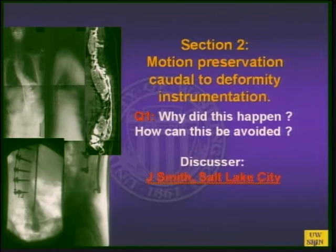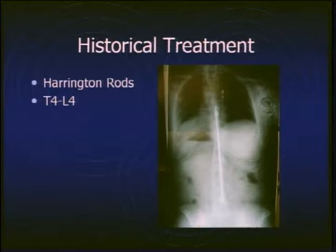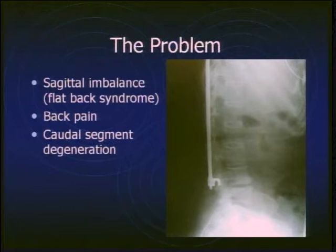The question I'd like to raise is: why did this happen and how can this be avoided? The classic treatment, as we discussed earlier, was T4 to L4 — what Sherm Coleman taught me. The problem seen in long-term Harrington rod patients is really the issue of flat back syndrome and true sagittal imbalance. These patients are certainly prone to back pain and, as would be predictable, caudal segment degeneration.